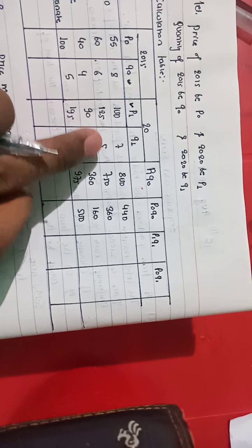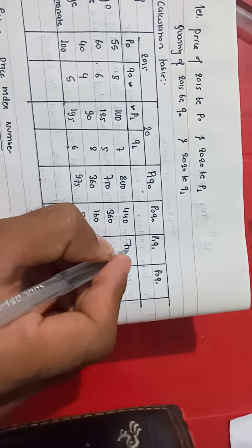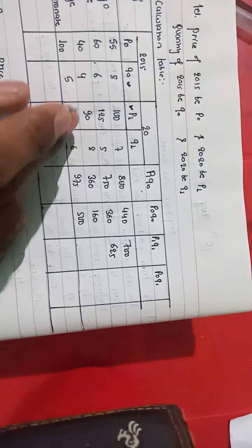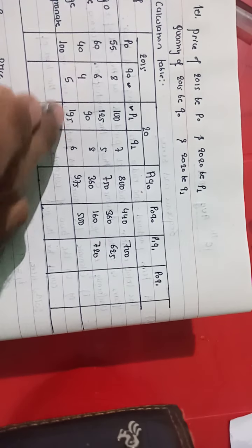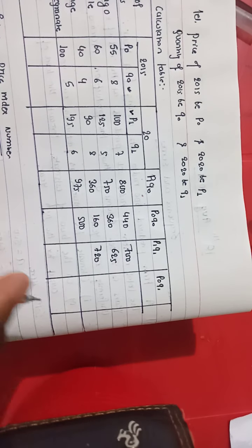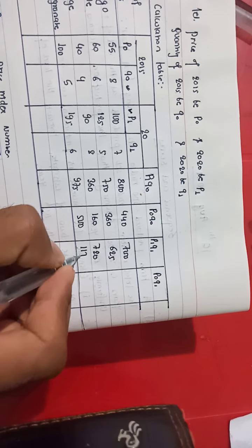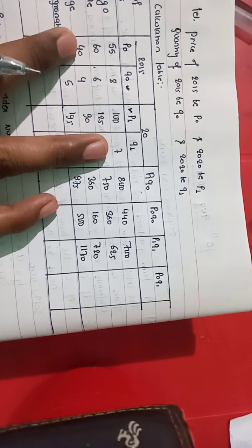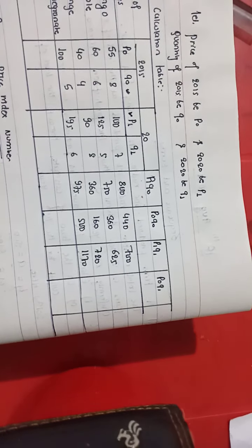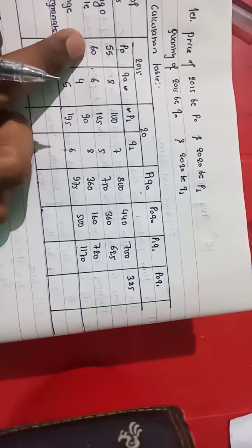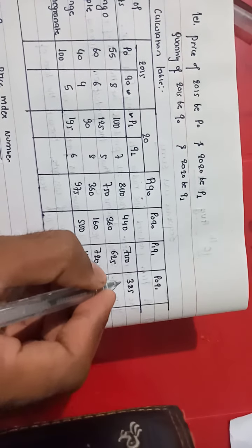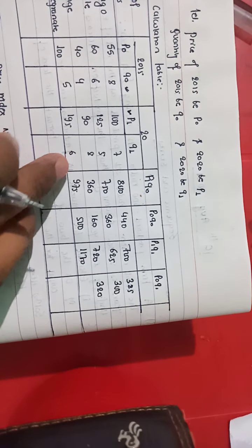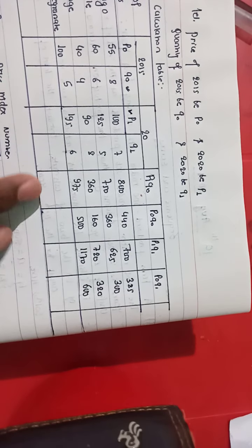Now we calculate P1Q1 by multiplying P1 (price of 2020) by Q1 (quantity of 2020): 100 × 7 = 700, 125 × 5 = 625, 90 × 8 = 720, and 195 × 6 = 1170. Next, for P0Q1, we multiply the price of 2015 by Q1 (quantity of 2020): 55 × 7 = 385, 60 × 5 = 300, 40 × 8 = 320, and 100 × 6 = 600.